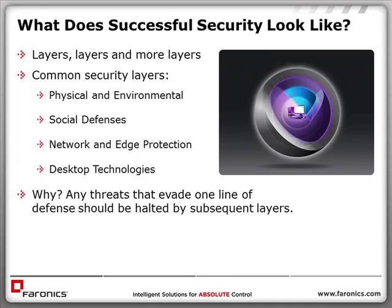A layered approach gives two great advantages: more threats are protected against, and if one defense is compromised, a second, third, or fourth still stands ready. For example, a machine protected solely with Deep Freeze can temporarily become infected — reboot and it's clean, until reinfected. This is where a preemptive layer such as antivirus or anti-executable combined with antivirus and Deep Freeze creates a very well-protected machine. Common layers include physical and environmental, social defenses with written security policies, network and edge protection, and desktop technologies.